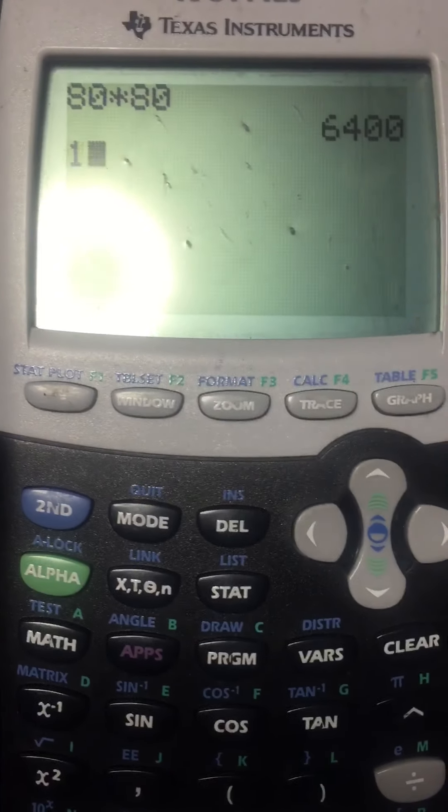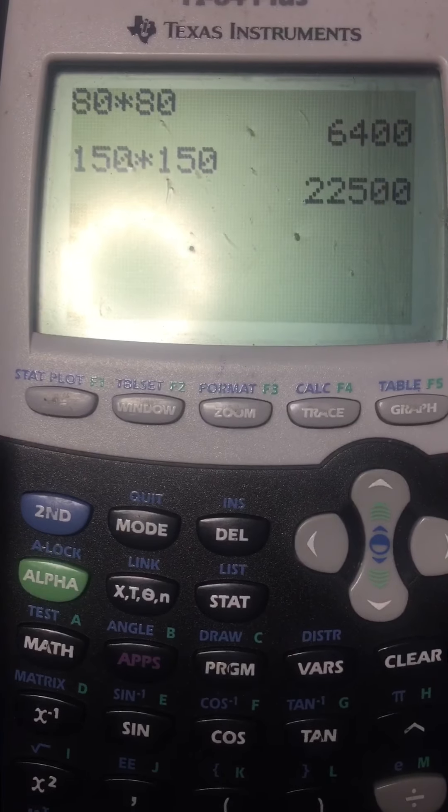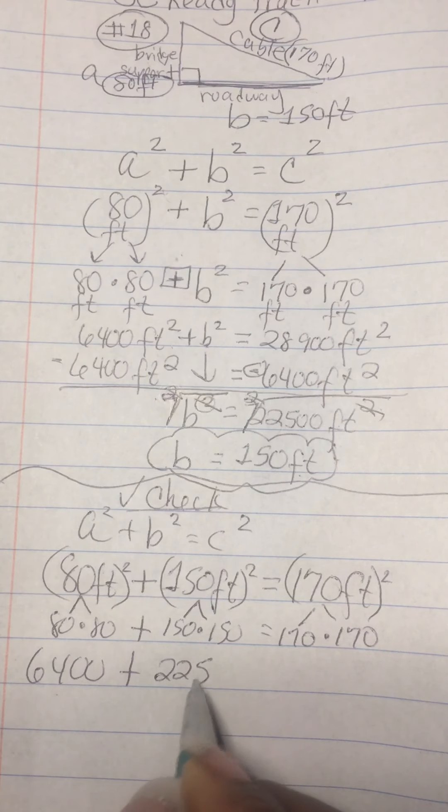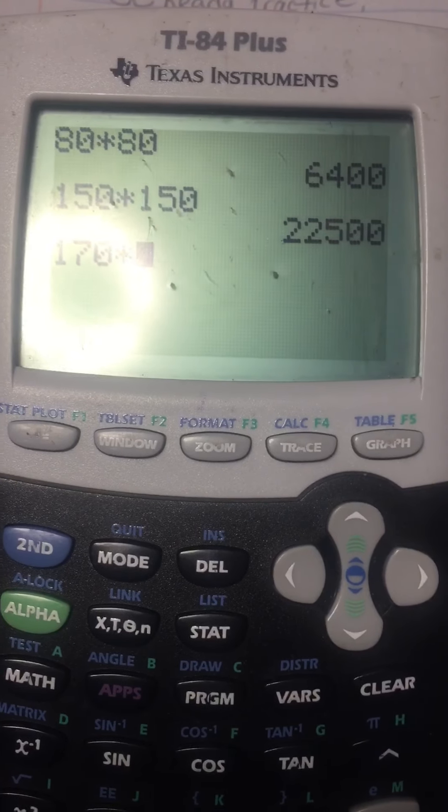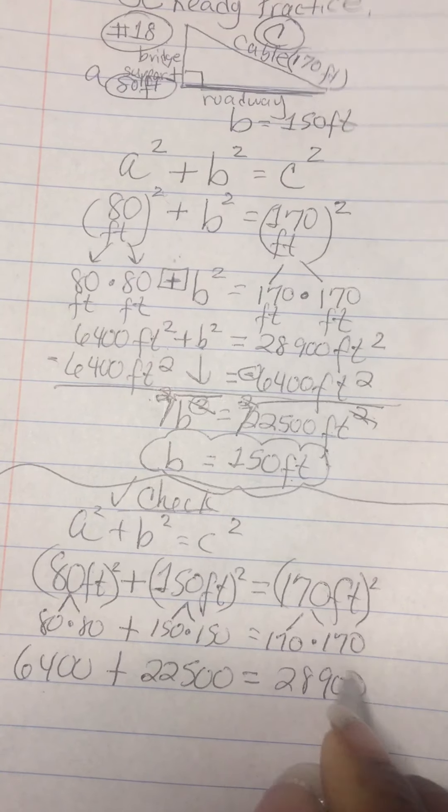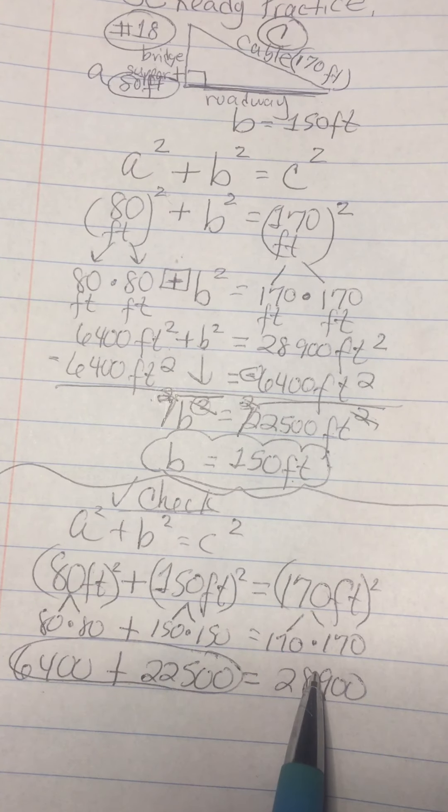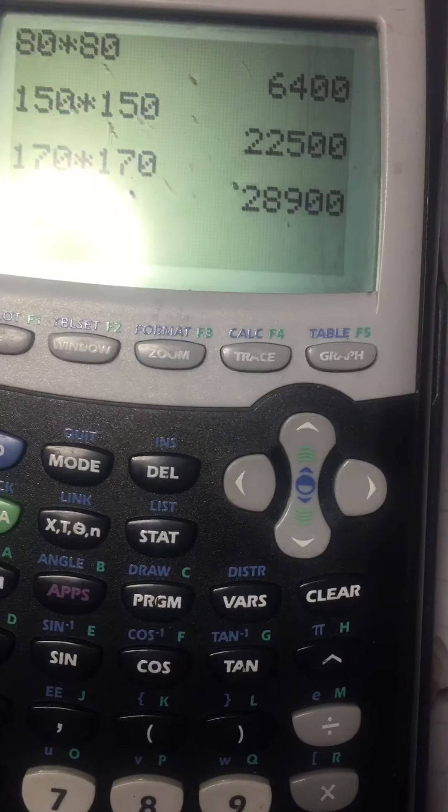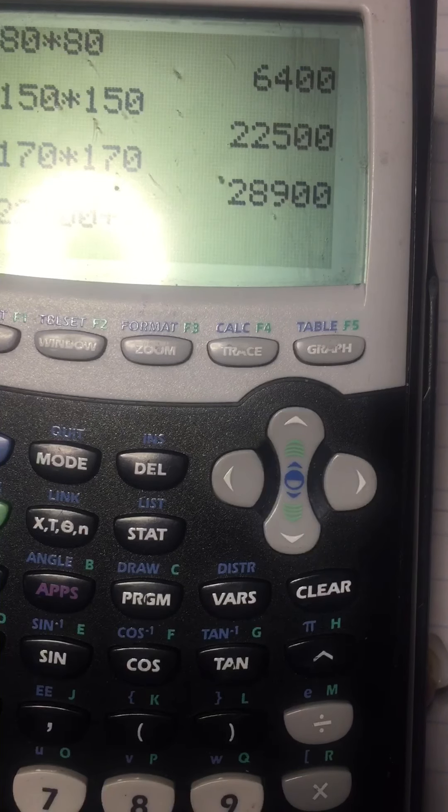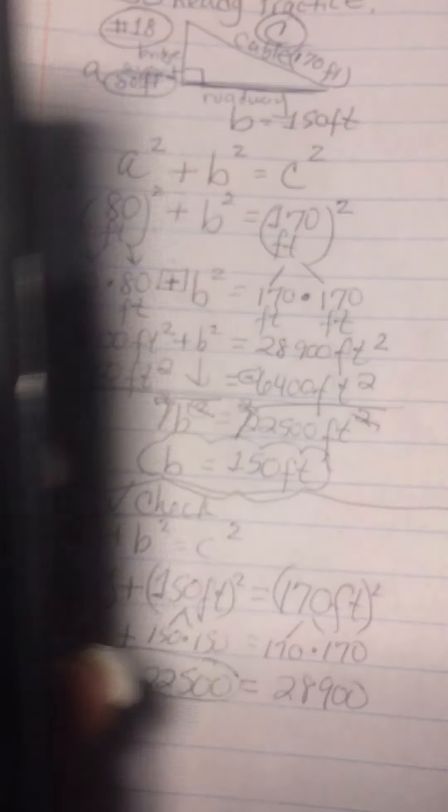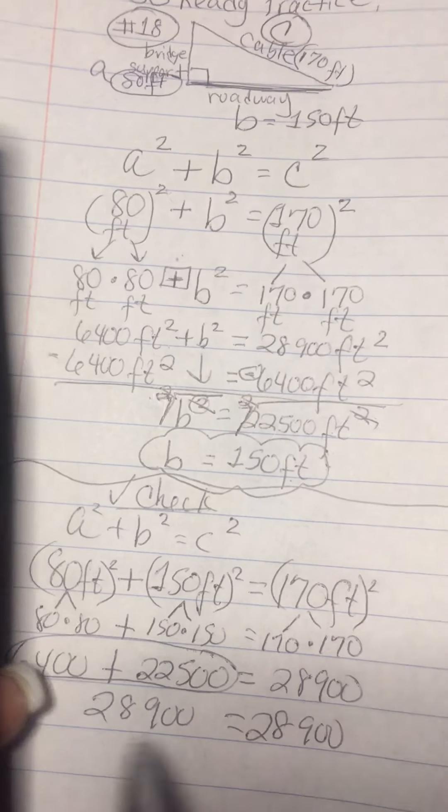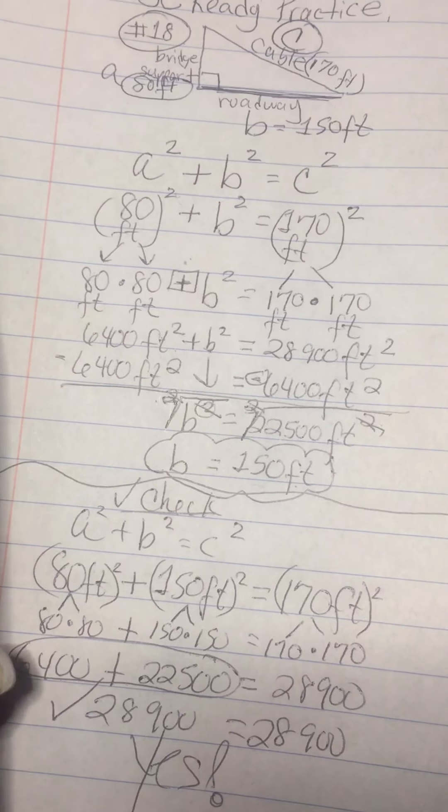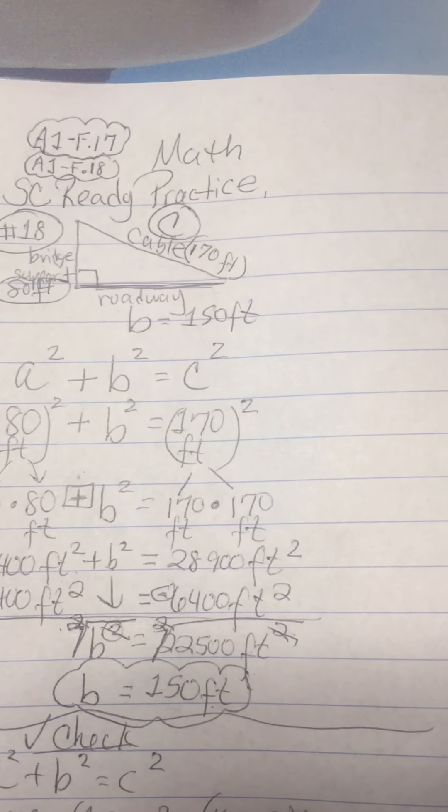Plus 170 times 170. So again, it's 28,900, so when I add these two numbers together, it should give me 28,900. Let's see. So I'm going to take 22,500 plus 6,400, and it gives me 28,900 equals 28,900. Yes. So that's how we know that this is correct.